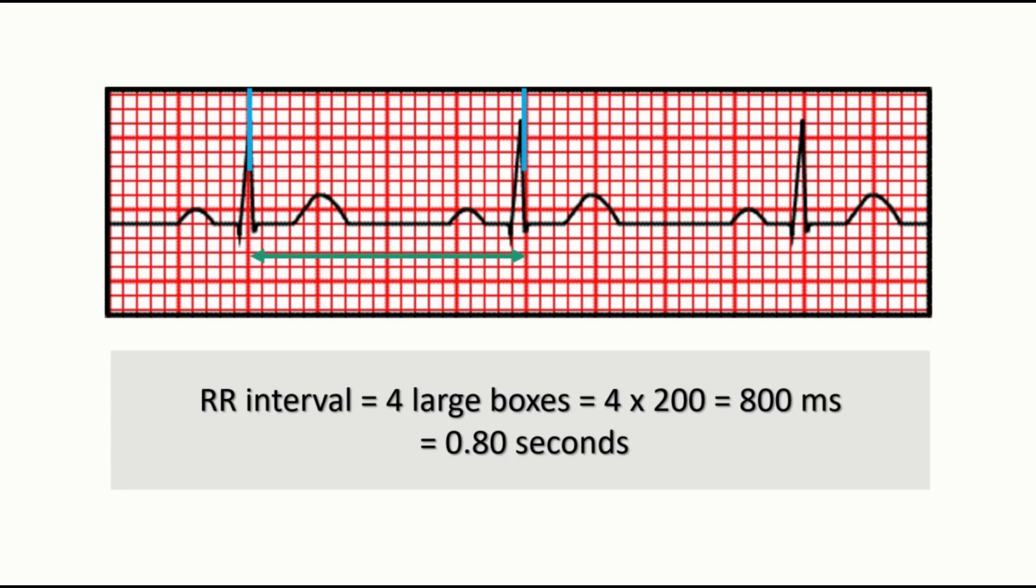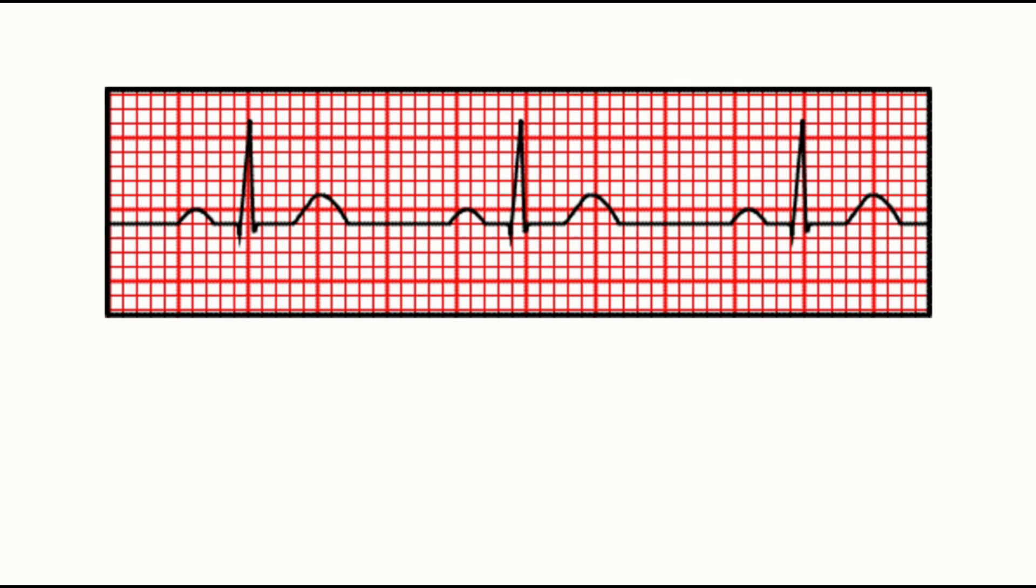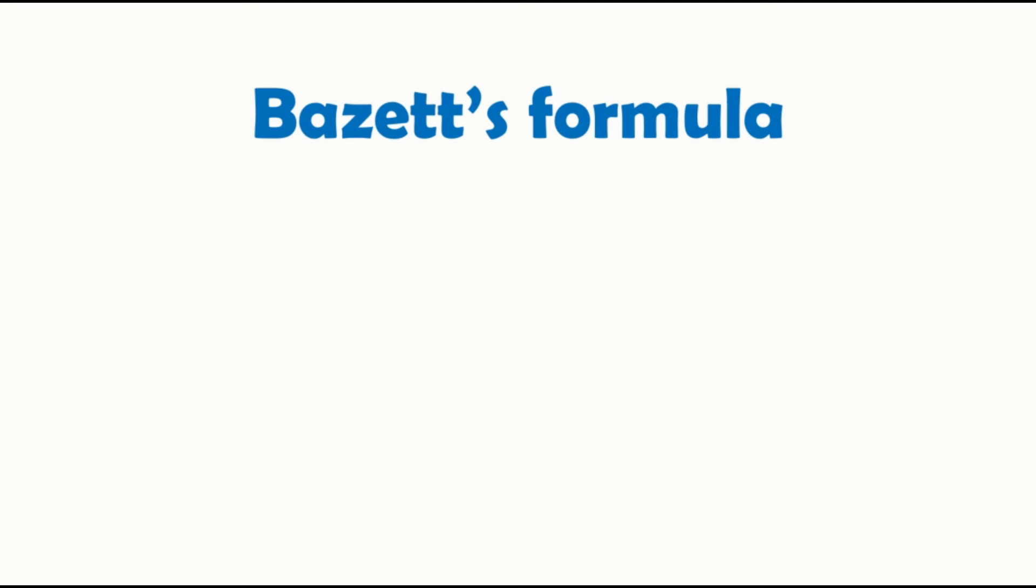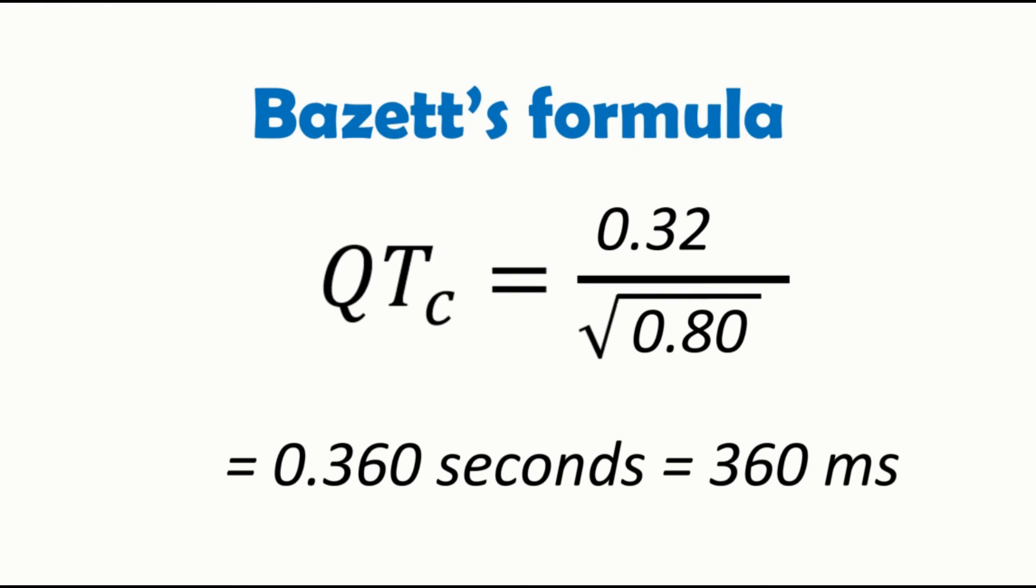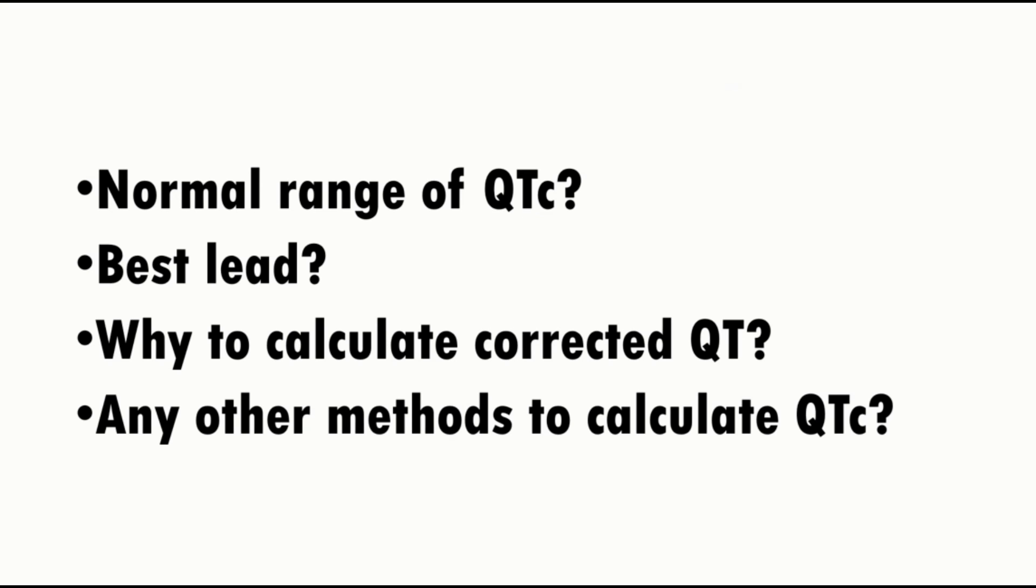Coming to the Bazett's formula, it states that corrected QT interval equals to the QT interval in seconds divided by root of RR interval in seconds. In our case, QT interval is 0.32 seconds and RR interval is 0.80 seconds, so corrected QT interval will be 0.360 seconds or 360 milliseconds. This was a simple method to calculate corrected QT interval on an ECG.